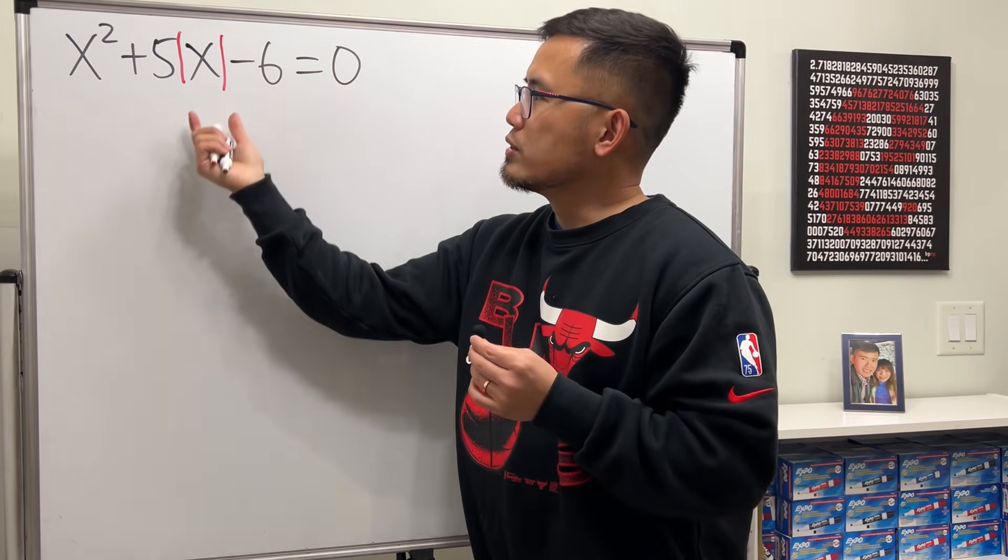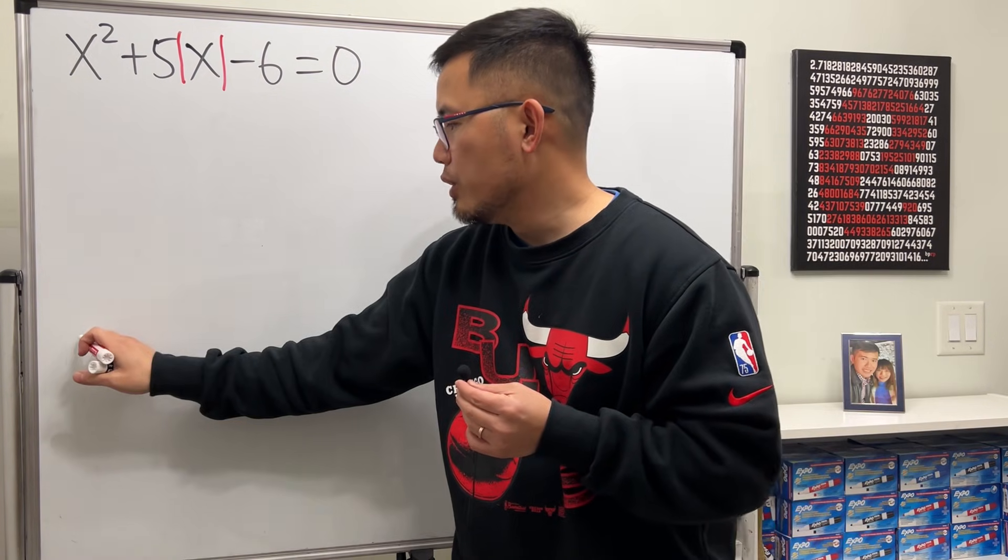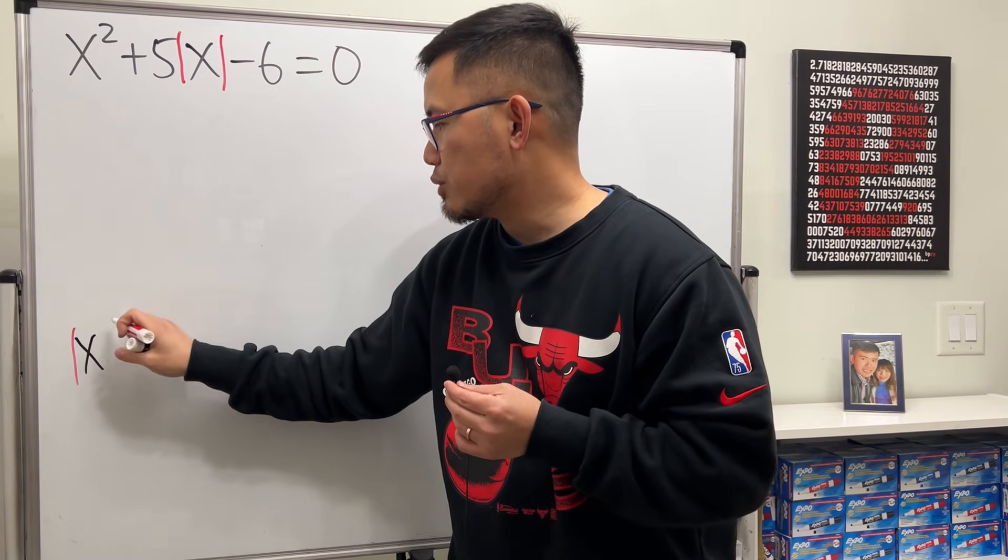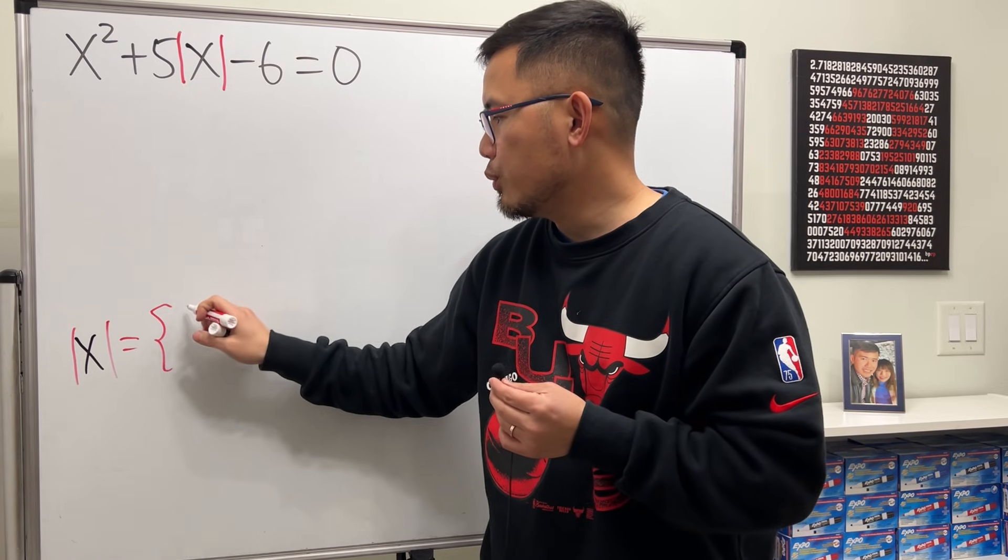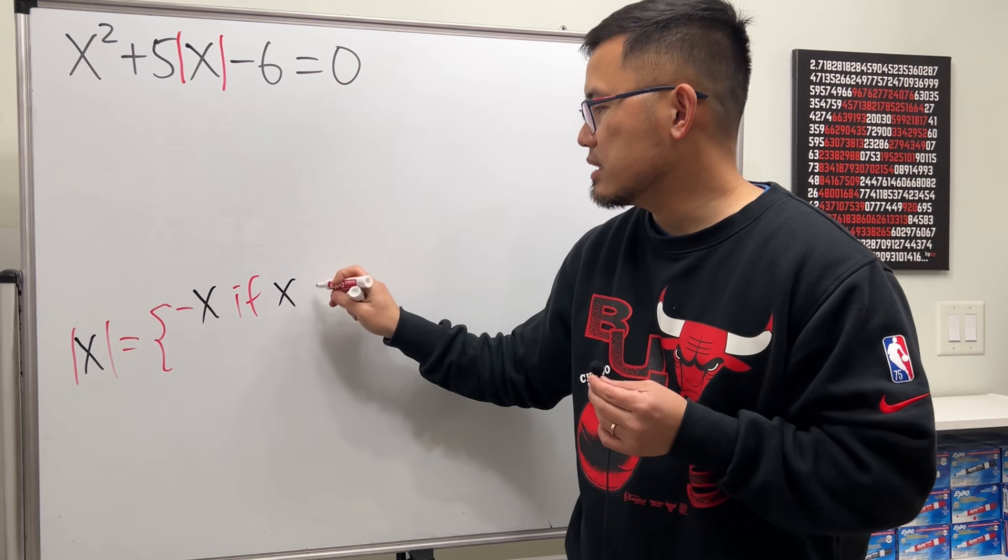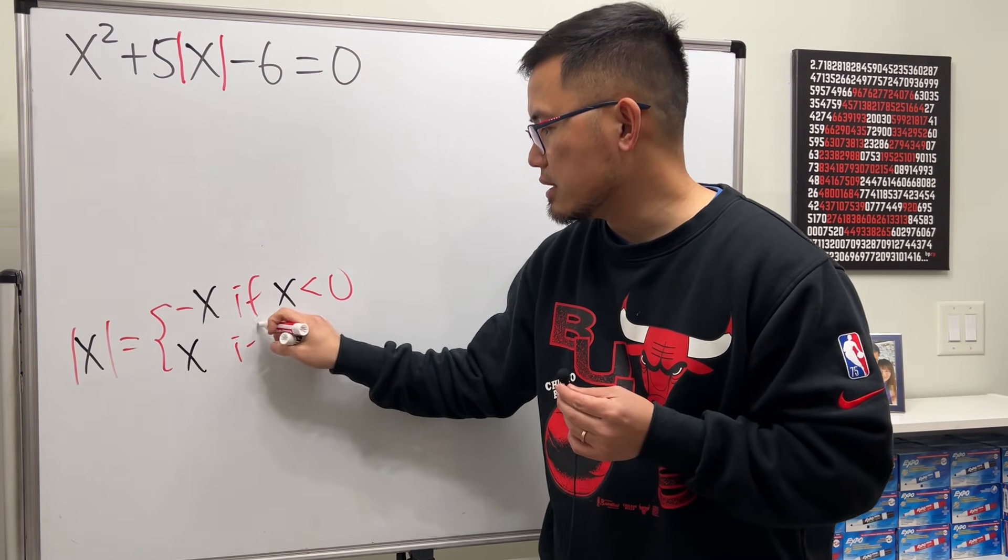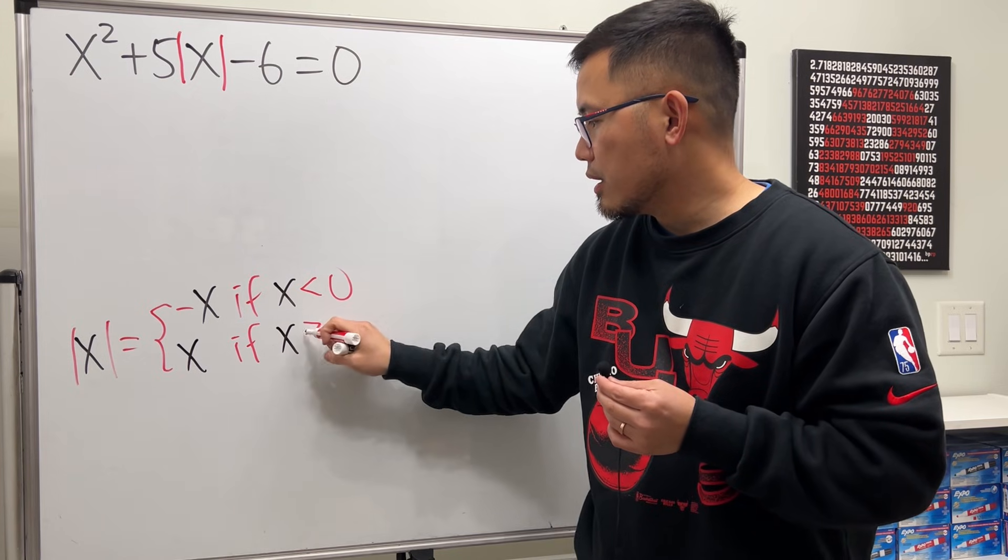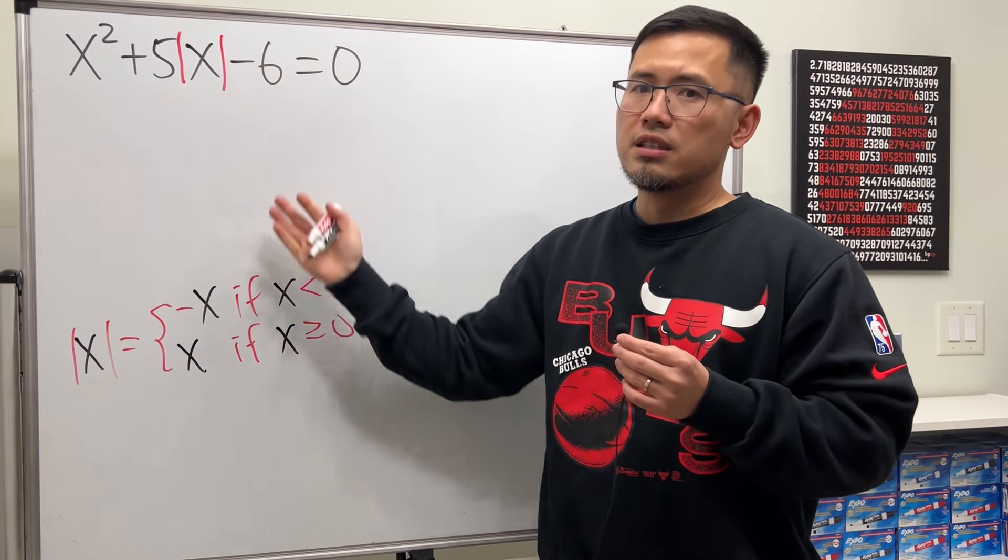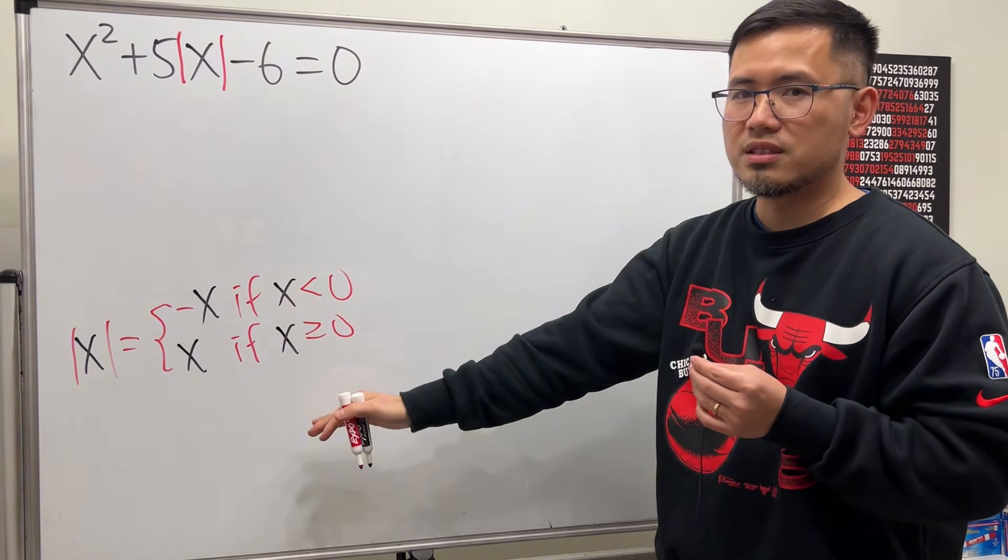Firstly, though, of course, to take care of this absolute value, we can use the piecewise definition. We know that absolute value of x, this right here, equals either we get negative x, and that's when x is less than zero, or we'll just get x, and that's when x is non-negative. So we'll just consider cases. But let me tell you, no, we will not end up with six solutions by doing this.